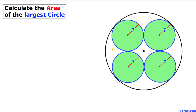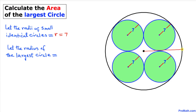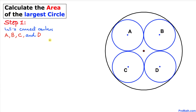Let's get started with our solution. We'll call the radius of each smaller identical circle lowercase r, and we know this radius r equals 7. We'll call the radius of the largest circle uppercase R, and we are going to find the value of uppercase R.